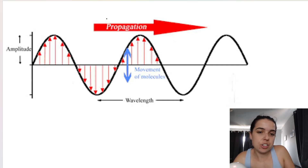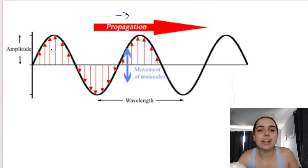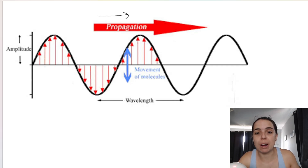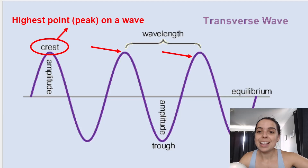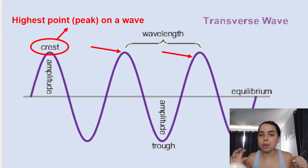Here's another diagram illustrating the same concept. The word 'propagation' just means which way the wave is moving — in this case, to the right. The arrows indicate the direction the particles are vibrating, which is up or down. So the particles move up or down while the wave moves left or right.